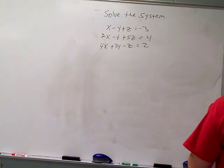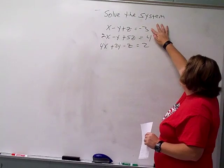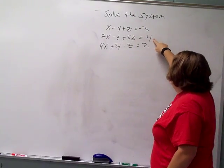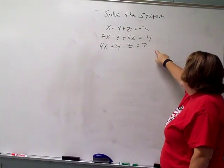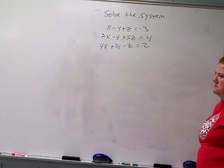Okay, we've got to solve this system of equations again. This is x minus y plus z equals negative 3, 2x minus y plus 5z equals 4, and 4x plus 2y minus z equals 2.